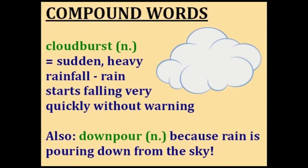Cloudburst. You probably already know that this is a cloud, and the word burst means to explode. So a cloudburst is a sudden, heavy rainfall — when rain starts falling very quickly without warning. It's like the cloud exploded with rain. Another compound word for heavy, continuous rain is a downpour, because rain is just pouring down out of the sky.